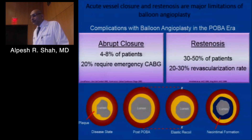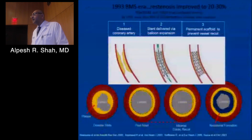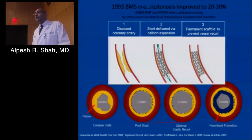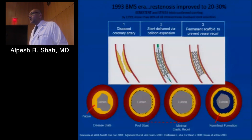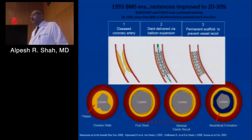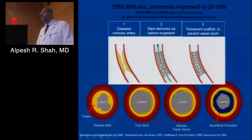That's where the idea of the stent came along. We started with metallic stents — what we now call bare metal stents. Restenosis improved significantly from 30–50% down to 20–30%, confirmed by stent trials such as BENESTENT and STRESS. By the late 1990s, almost 80% of procedures used bare metal stents. This stent scaffold prevented the immediate recoil that occurred after balloon angioplasty alone. However, we still had neo-intimal proliferation causing further restenosis.